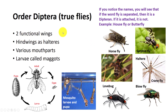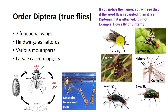They contain an estimated 1 million species and include the familiar housefly, horsefly, cranefly, lovebug, and mosquito. Flies have a mobile head and a pair of large compound eyes. The mouthparts are designed for piercing and sucking such as mosquitoes, blackflies, and robberflies, or for cutting and sponging in other groups.